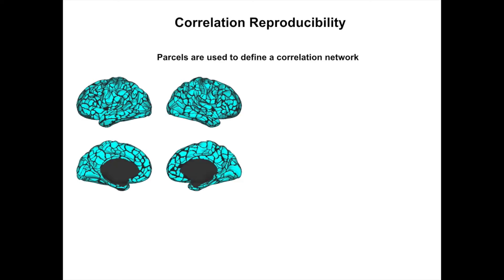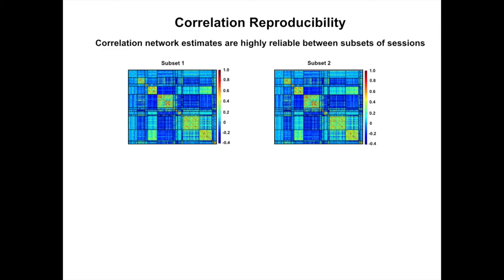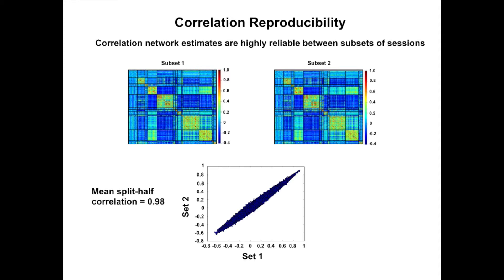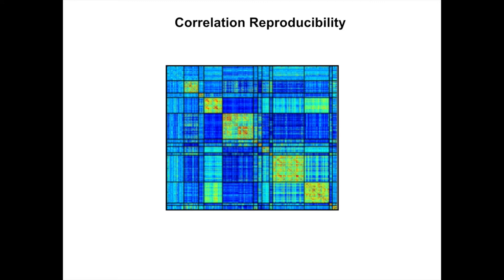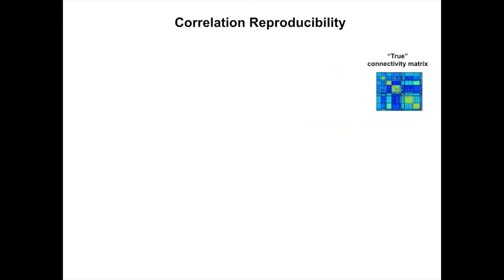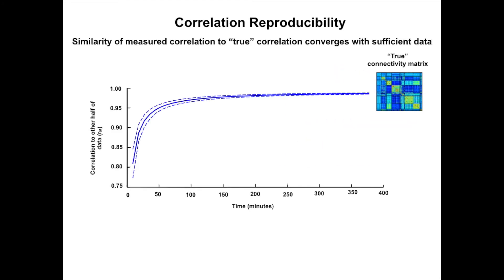A key question for this investigation was determining how much data is needed to obtain a given level of precision in the correlation estimates. Using the individually defined parcels to generate a correlation network, we show that near-perfect reproducibility is obtained when two halves of the data — each including 380 minutes of rest — are compared to each other. We observe that reproducibility steeply increases up to 25 to 30 minutes of data and begins to converge by 90 to 100 minutes.